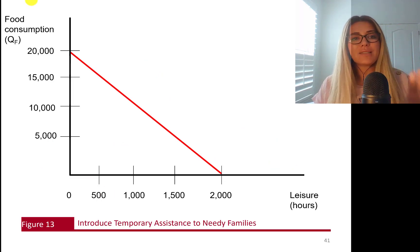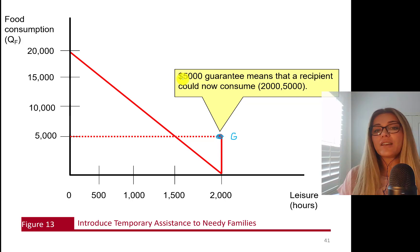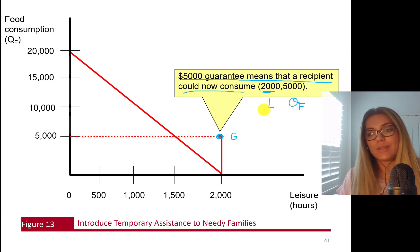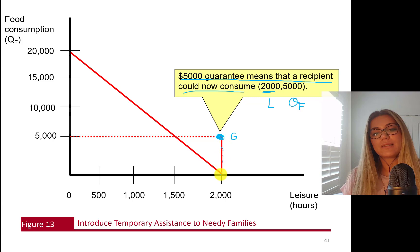So with each hour of work, you're going to make $10 of salary. Guess what? This G will be reduced by 50% of what you made. Let's say you made $10. Your collection of this $5,000 will be reduced to $4,995 only. In English, if you don't work at all, you get $5,000. When you start working, each dollar you make, you're going to lose 50 cents of that $5,000. So let's see what it does to my budget line.